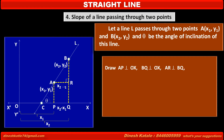Since AR is equal to PQ as opposite sides of a rectangle, AR is equal to x2 minus x1. AP is y1, as y1 is the y-coordinate of point A. BQ is equal to y2 as y2 is the y-coordinate of point B. Therefore BR is equal to y2 minus y1.